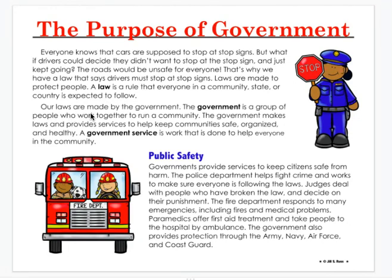Our laws are made by the government. The government is a group of people who work together to run a community. The government makes laws and provides services to help keep communities safe, organized, and healthy. A government service is work that is done to help everyone in the community. So the government is here to create services — not only to help people, but to create laws to make them safe.